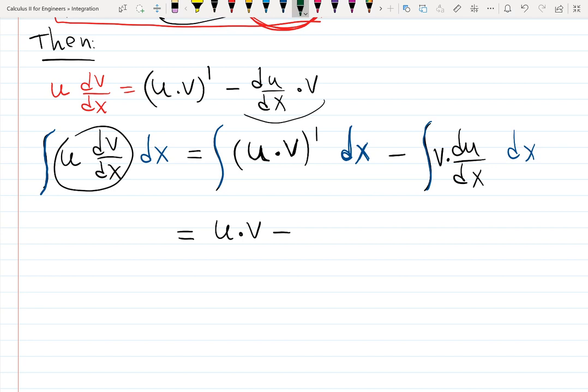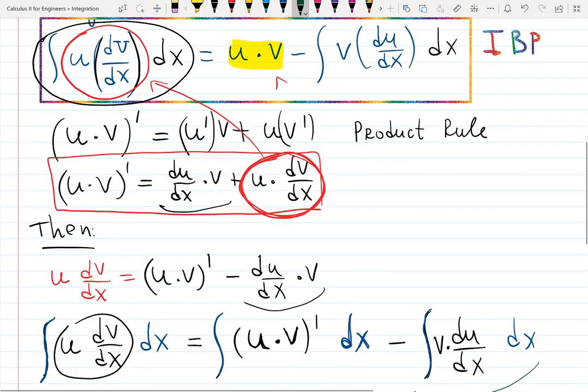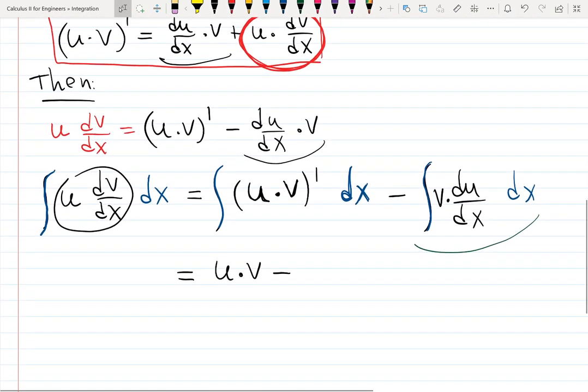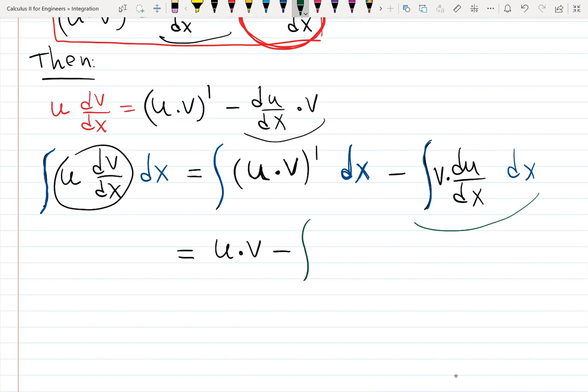What's going to happen with the right hand side? Nothing is going to happen. Look at the formula, it's already matching the formula over here, it's exactly what we need. We're going to have v du/dx dx.